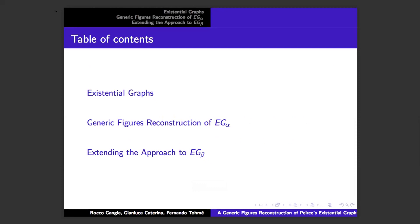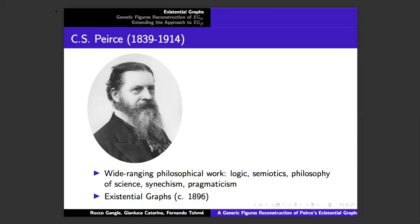The talk today is on the existential graphs of Charles Peirce, basically three parts: summarize the alpha graphs very quickly, then get to this reconstruction of the EG alpha logic notation using generic figures, and then at the very end sketch out quite briefly how this approach can be extended to the beta graphs.